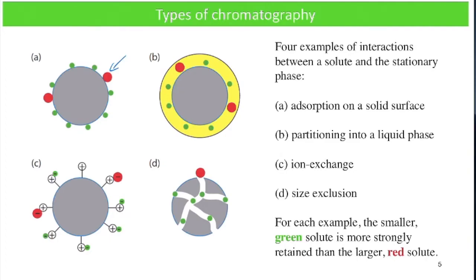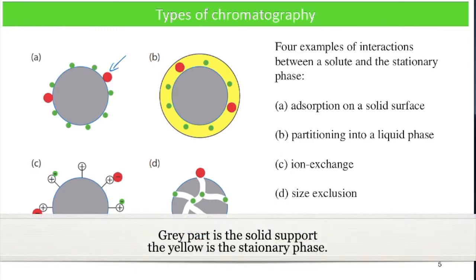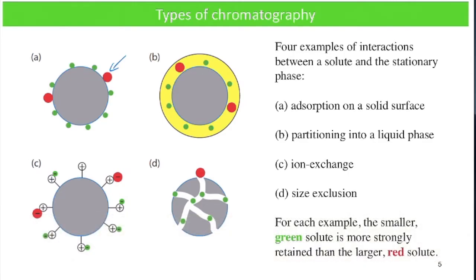For type B — partitioning into a liquid phase — the liquid phase is part of the outer surface of the gray stationary phase material. The molecules will migrate into that yellow layer as they partition into the liquid phase, and at some point they will partition back out into the mobile phase, where they can then interact with another stationary phase particle somewhere further down the column.